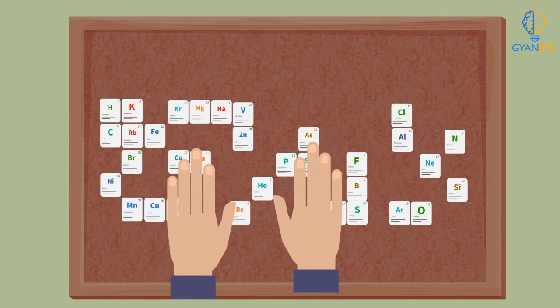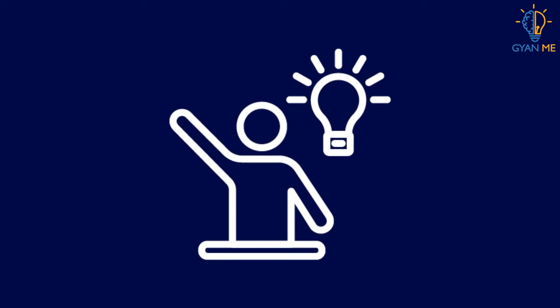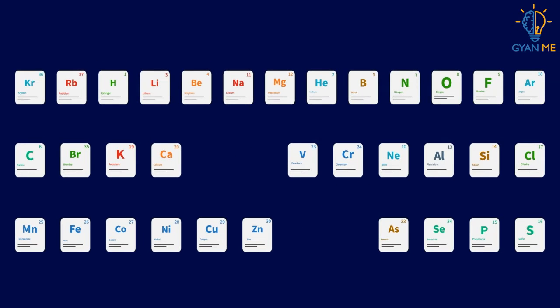As per one story, one day when he fell asleep while arranging the cards, he realized that all the elements fell into a perfect order, only with certain gaps in between this order.